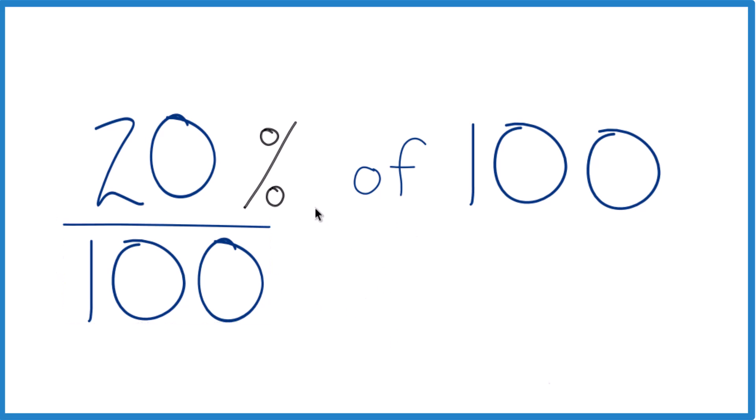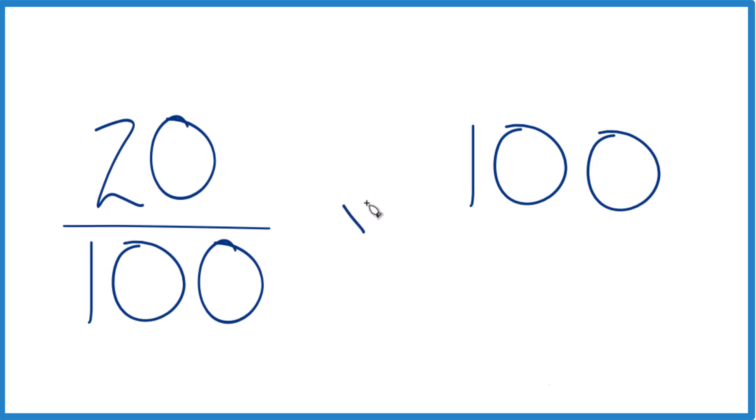The other thing you could do is, let's get rid of the percent here. We have 20 per 100, and we're going to multiply this by 100, but we're going to call it 100 over 1. It's still 100, we're just dividing by 1, but things line up pretty nicely right now.